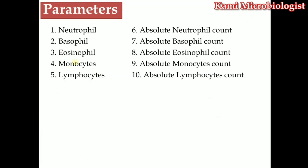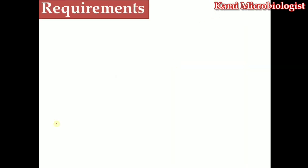There are almost 10 parameters of the DLC: neutrophils, basophils, eosinophils, monocytes, and lymphocytes, plus absolute neutrophil count, absolute basophil count, absolute eosinophil count, absolute monocyte count, and absolute lymphocyte count. These are the most important parameters we find in a DLC.